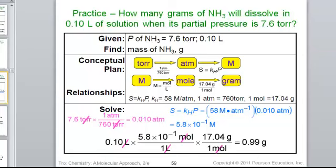Now, I have two like units: the pressure, 0.01 atmosphere, times that proportionality constant of 58. The atmospheres cancel, and we've determined that answer to be 5.8 times 10 to the negative 1.